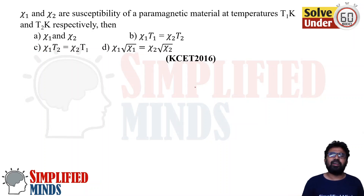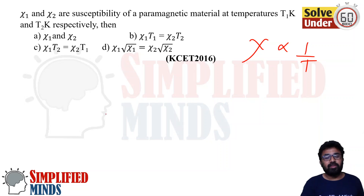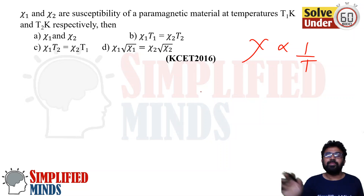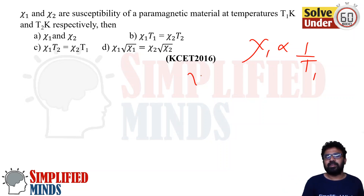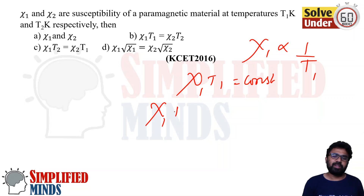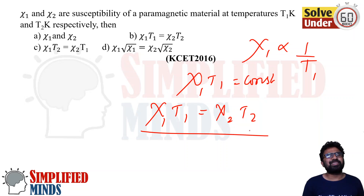These are very famous terms. The susceptibility is inversely proportional to temperature — that is Curie's law. So x1 × T1 = x2 × T2, which is constant. If you know that, it's very simple. It's similar to how in chemistry Boyle's law and Charles' law work — PV = constant and so on.